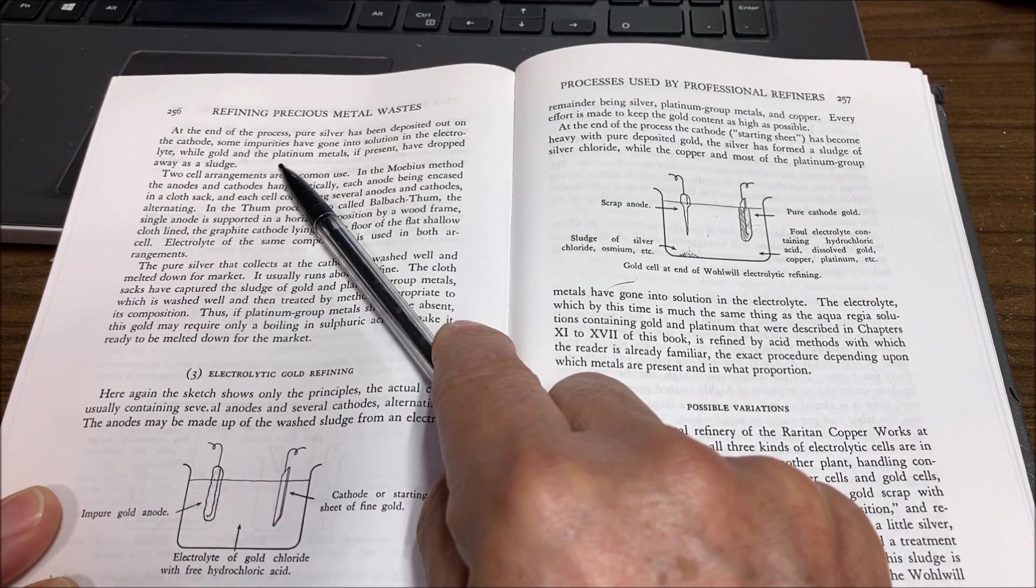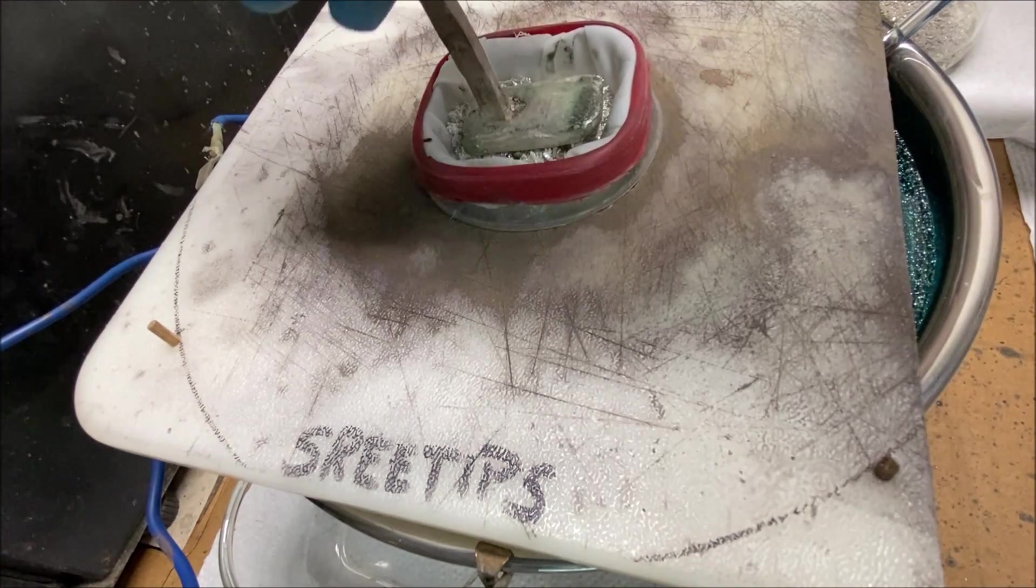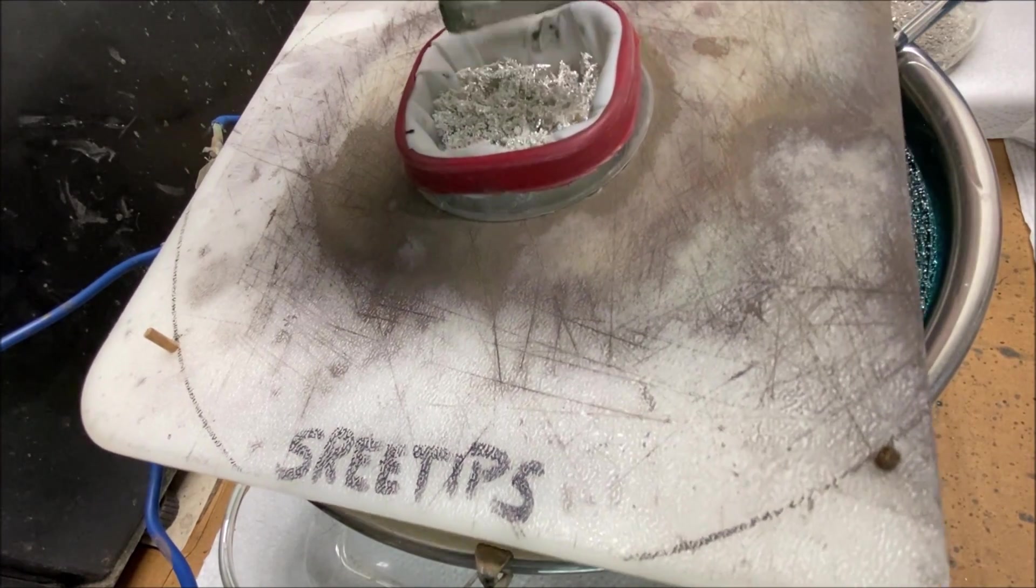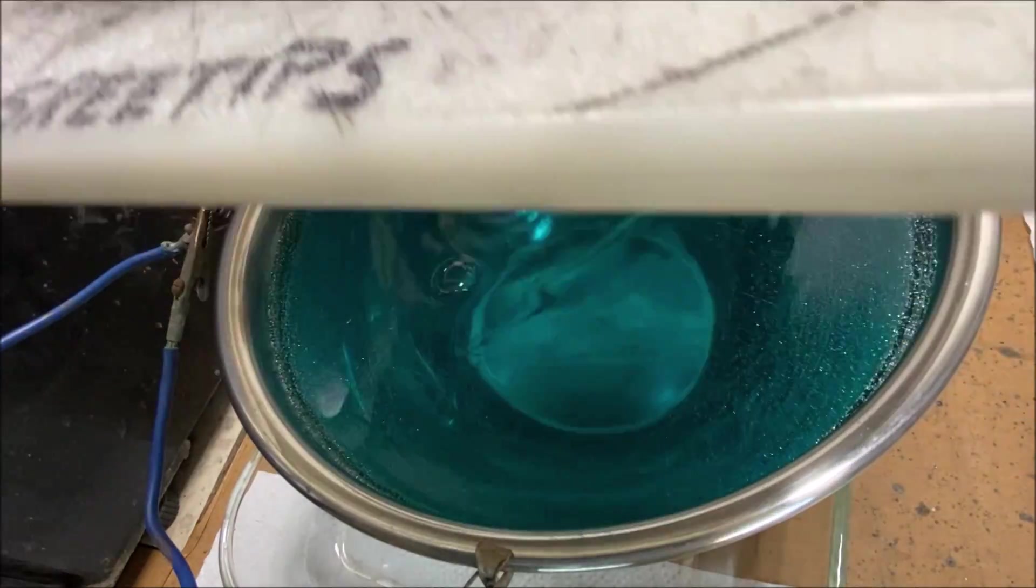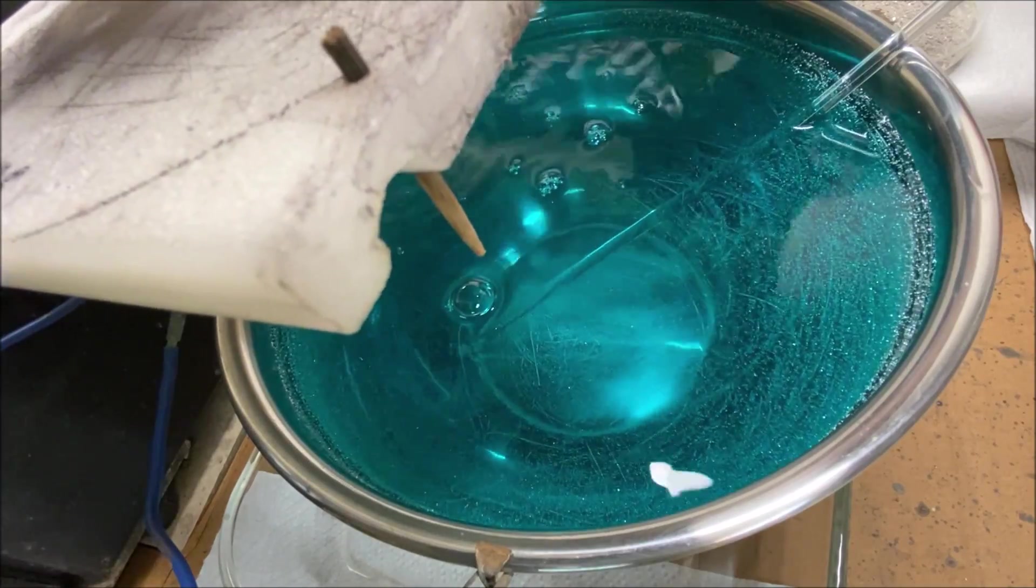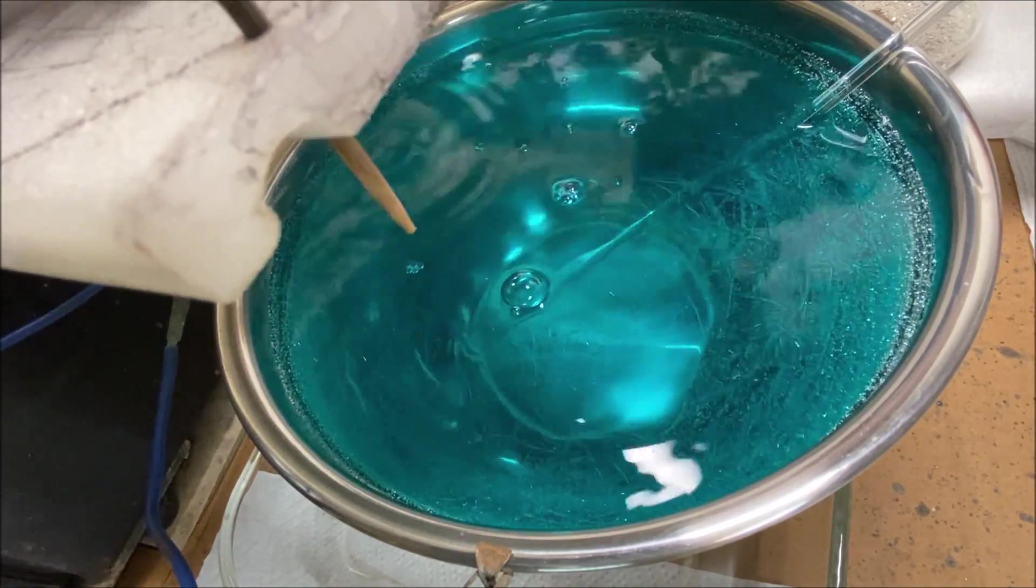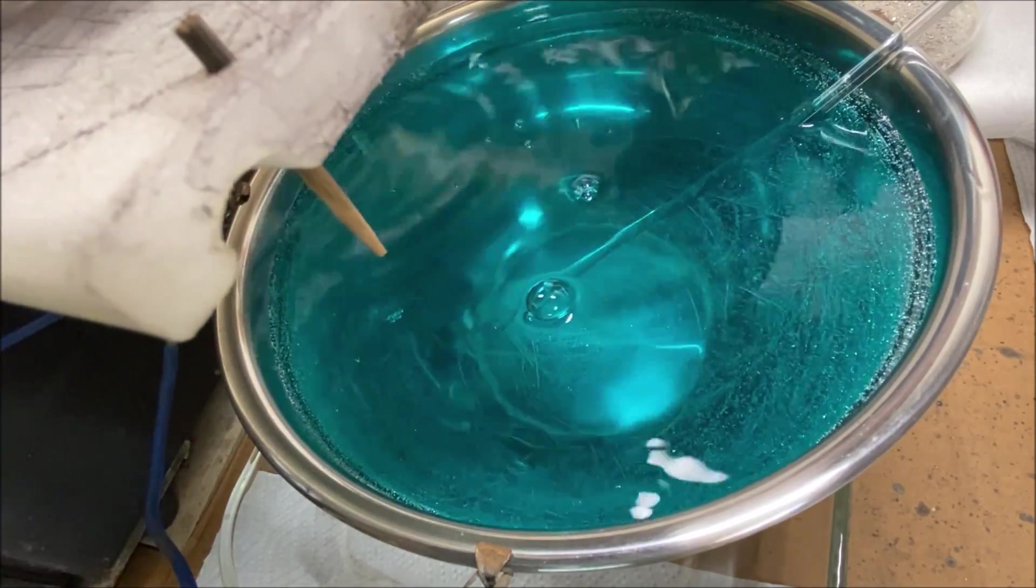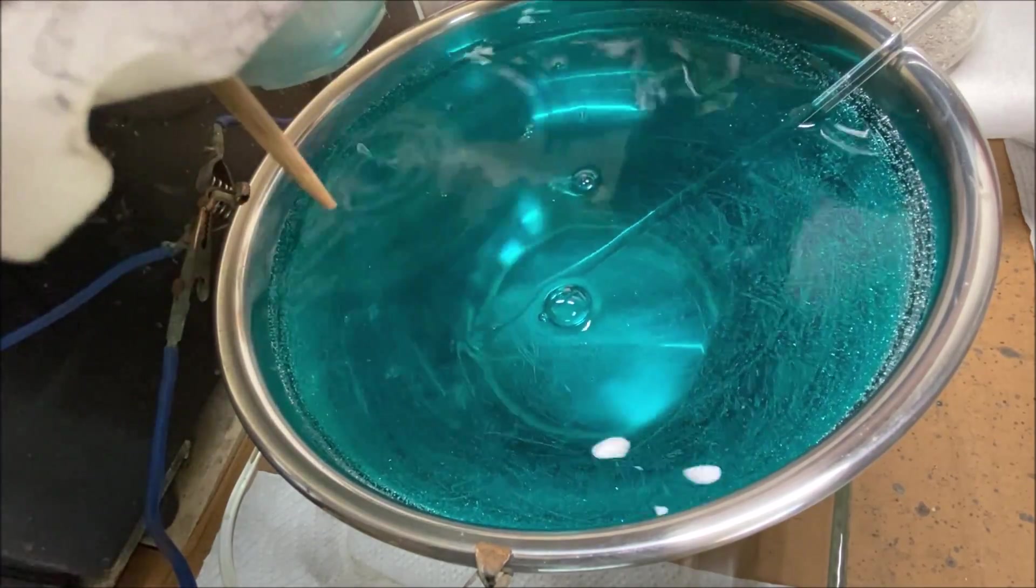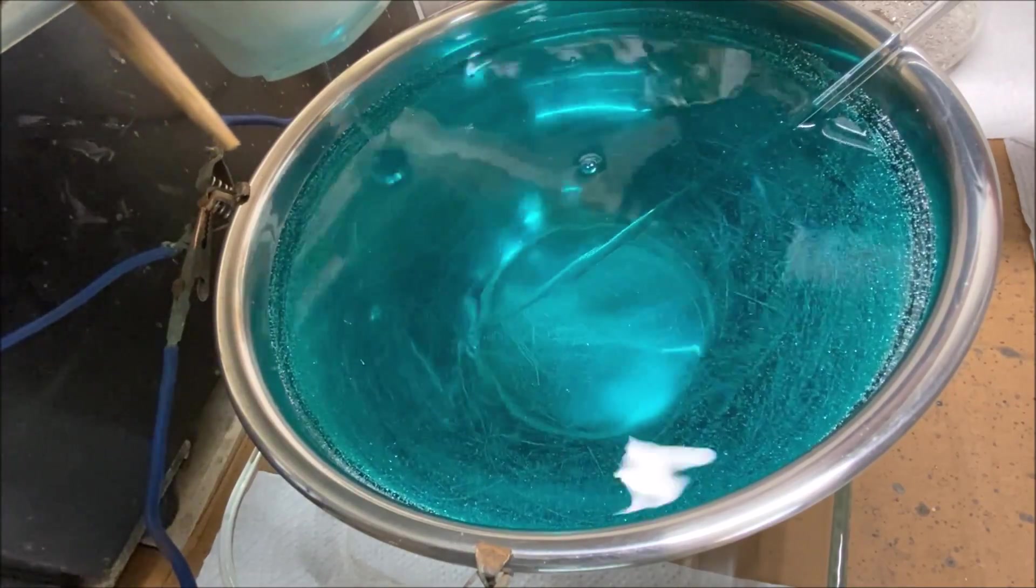Now let me pull this cover off here so you can see how much growth we have in there. That's about one and a half hours worth of operation. You can see the pure silver crystal starting to grow on the inside of the stainless steel bowl.